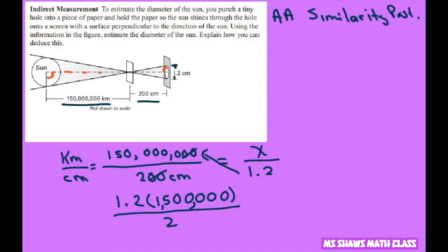Divide it by 2 equals X. If you want to make it even easier you can divide this by 2 which is 0.6 times 1,500,000.